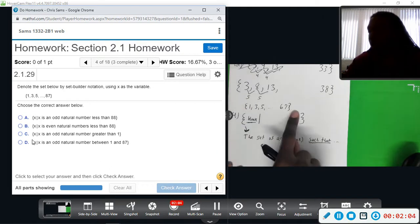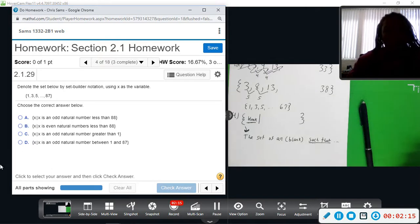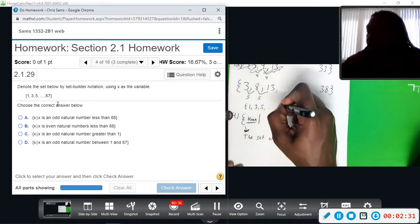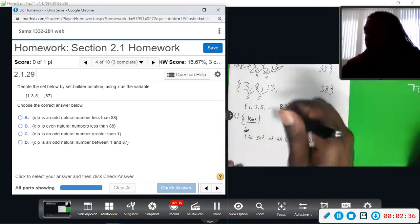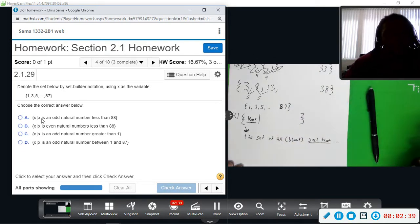We're looking for odd numbers. We'll say less than 68 because less than 67 would not include 67. So this is the set of all x such that x is an odd natural number less than 88. Wait, I can't see - that's 87, not 68. Sorry, it's 87, not 67. So x is an odd natural number less than 88.